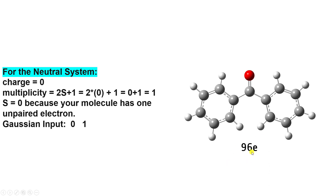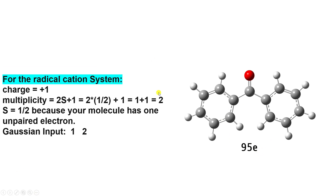Next is the radical cation system. We take the same benzophenone and remove one electron, giving 95 electrons total. The total charge is +1 and there is one unpaired electron. Using 2S + 1 with S = 1/2: 2 × (1/2) + 1 = 2. So in the Gaussian input file you have to mention charge +1 and spin multiplicity 2.